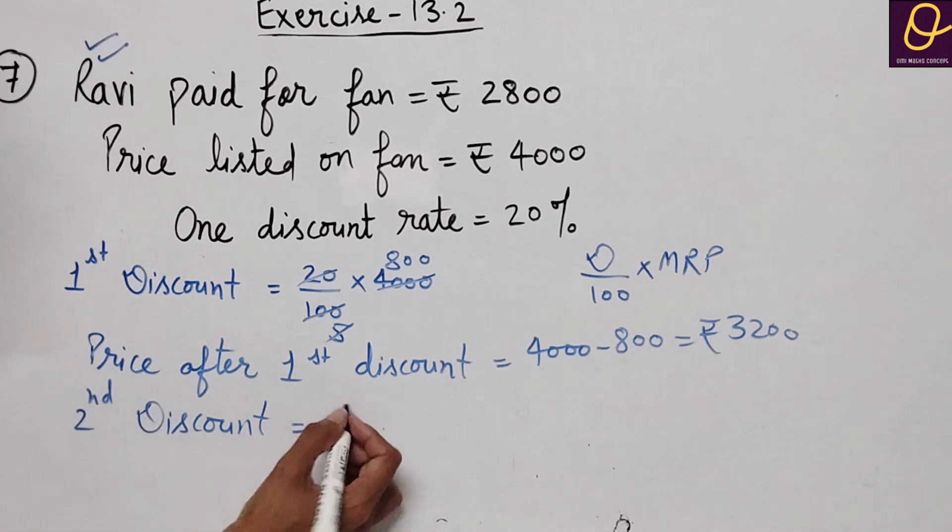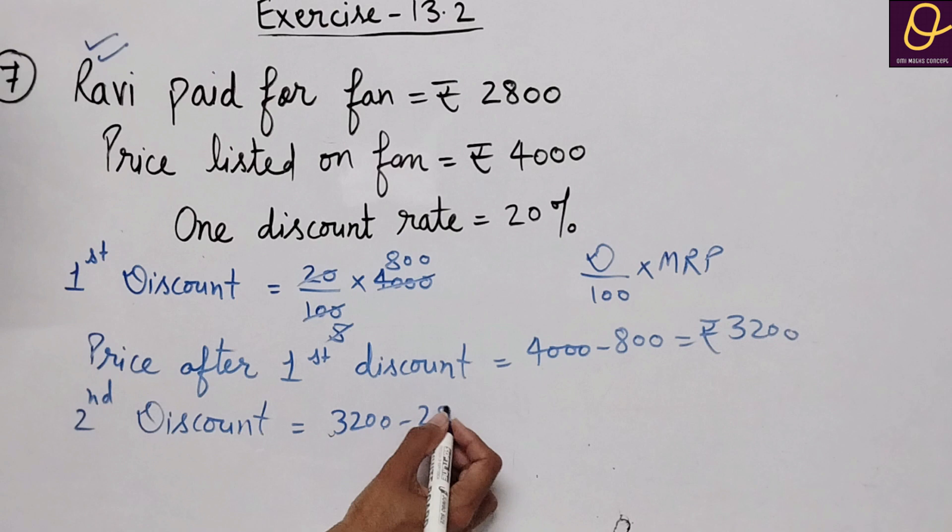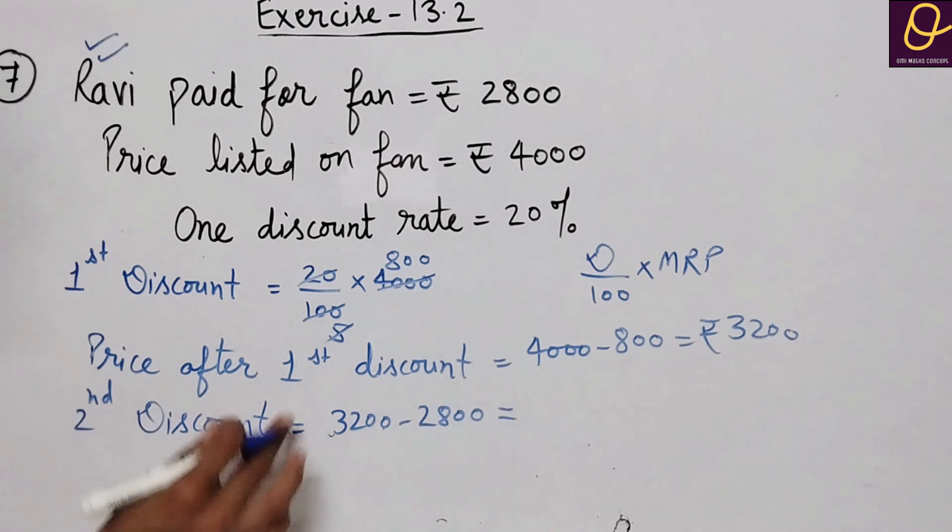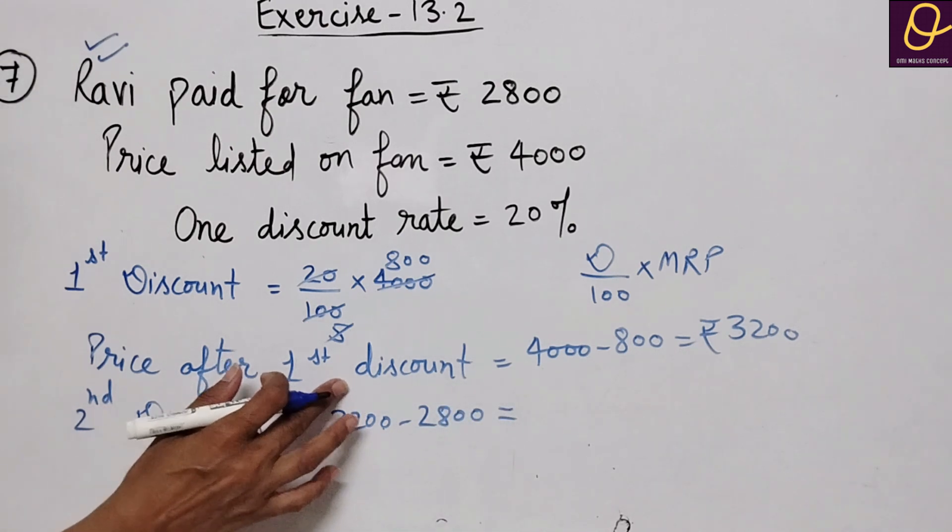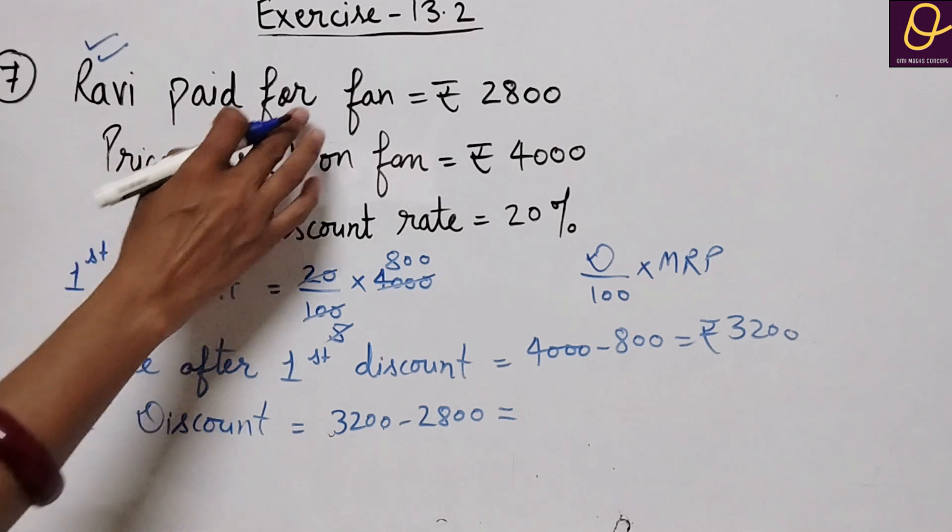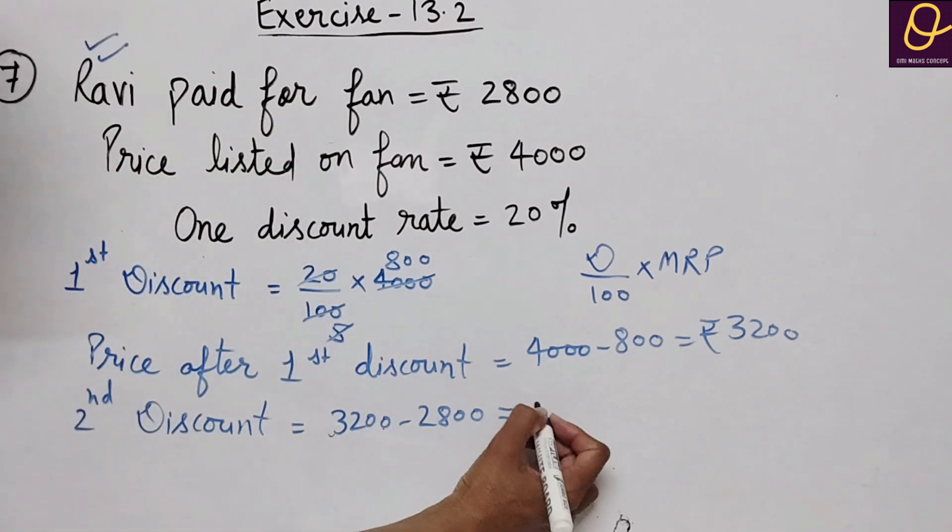So second discount is equal to three thousand two hundred minus two thousand eight hundred. The price after first discount and after second discount is two thousand eight hundred, so that is rupees four hundred.